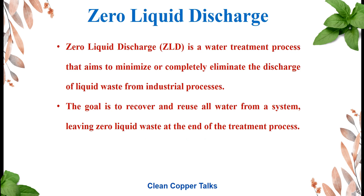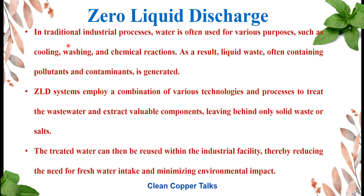In any industry, water is required for different types of operations such as cooling, washing, chemical reactions, and production. When water is used, it generates a lot of wastewater. The thumb rule is around 70 to 80 percent of water taken in comes out as wastewater — this varies largely industry to industry. The wastewater generated is highly contaminated, with BOD, COD, and other pollutants much higher than typical sewage.